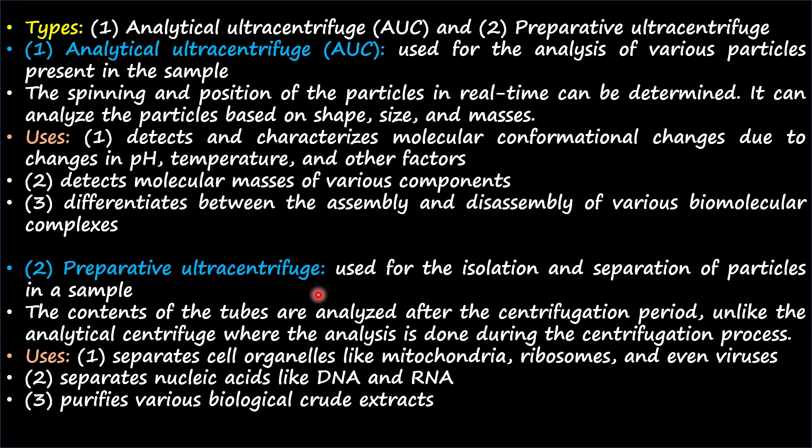The uses of preparative ultra centrifuge include: it separates cell organelles like mitochondria, ribosomes, and even viruses; it separates nucleic acids like DNA and RNA; and it purifies various biological crude extracts.